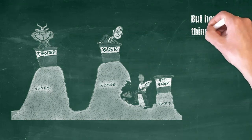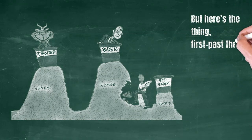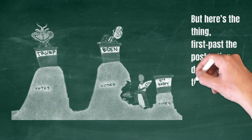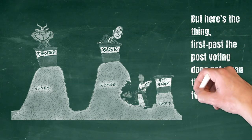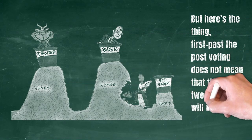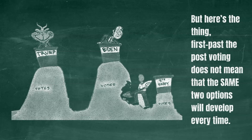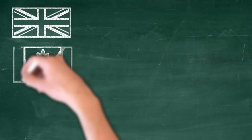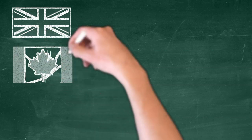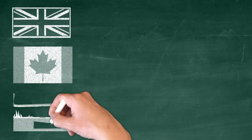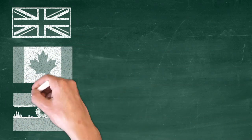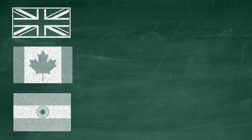But here's the thing: first-past-the-post voting does not mean that the same two options will develop every time. In fact, most other countries that use the same system — like Britain, Canada, Mexico, or India — tend to have important regional parties that sometimes become the main parties.